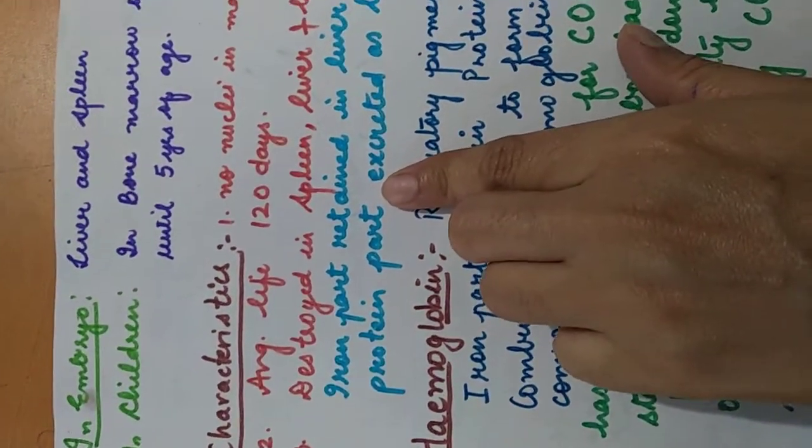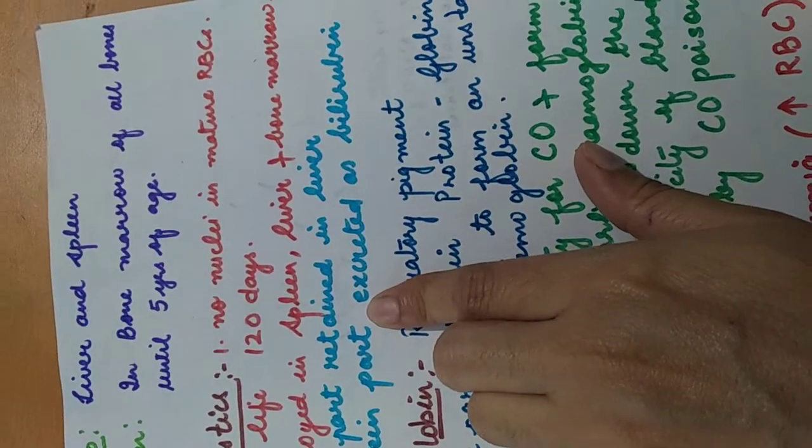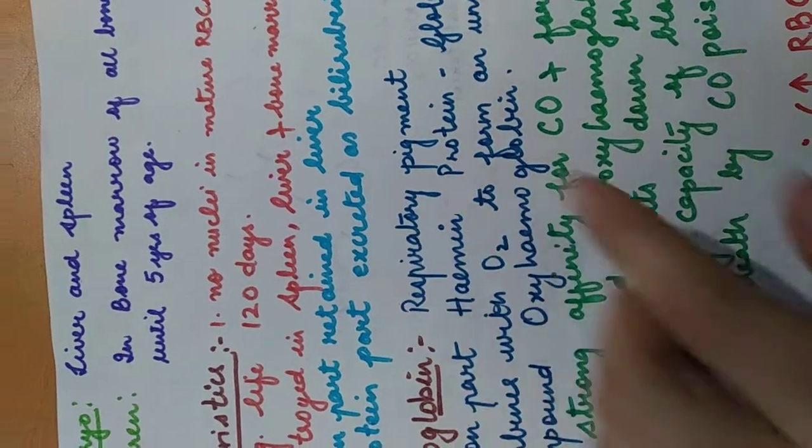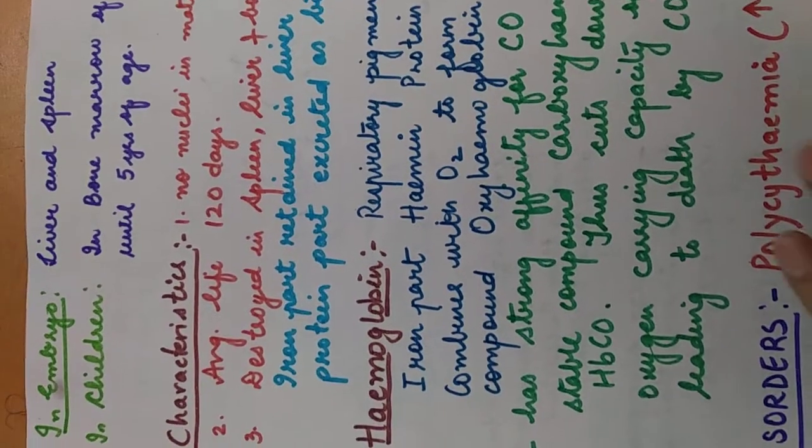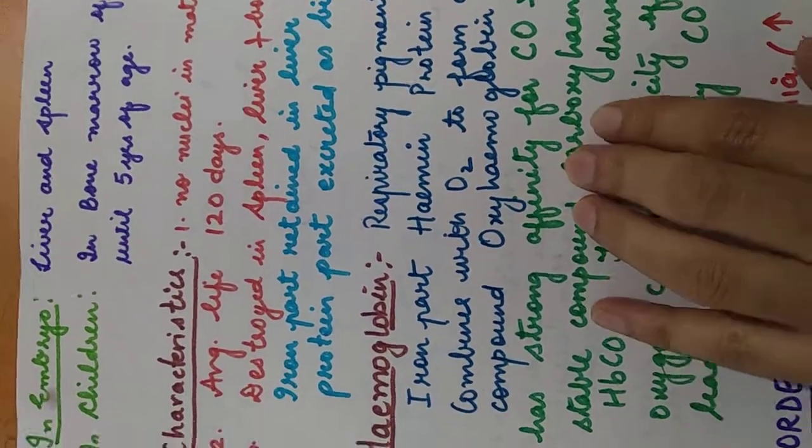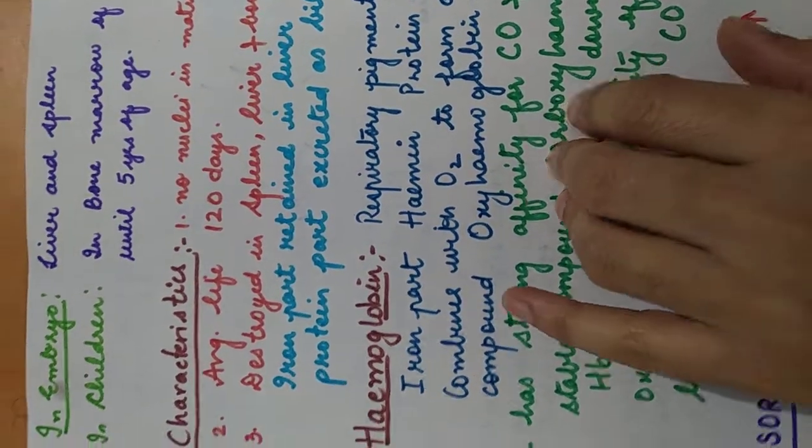Now we talk about the characteristics of blood. No nucleus in mature RBCs. When the RBCs are produced, they do have a nucleus, but when they mature, they lost it. Average lifespan of RBCs is around 120 days.